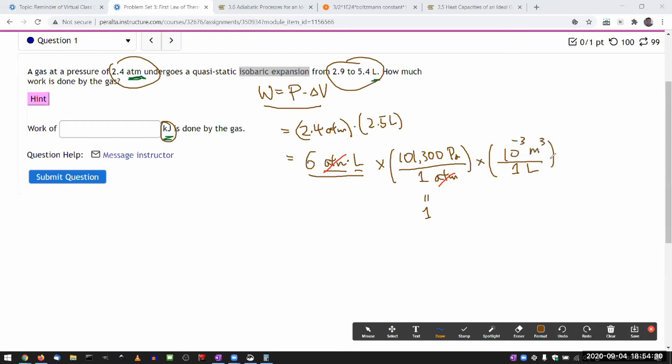You can write it in different ways, as long as this ratio is equal to one. When I do this conversion, the unit I end up with is going to be joules. So I'll need to divide the resulting thing by another 1000 to get a number in kilojoules.